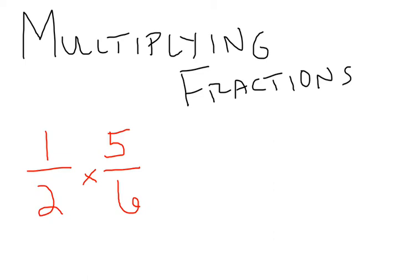The way you do it is you're just multiplying your numerators and you're multiplying your denominators. When we do that, we are multiplying straight across.